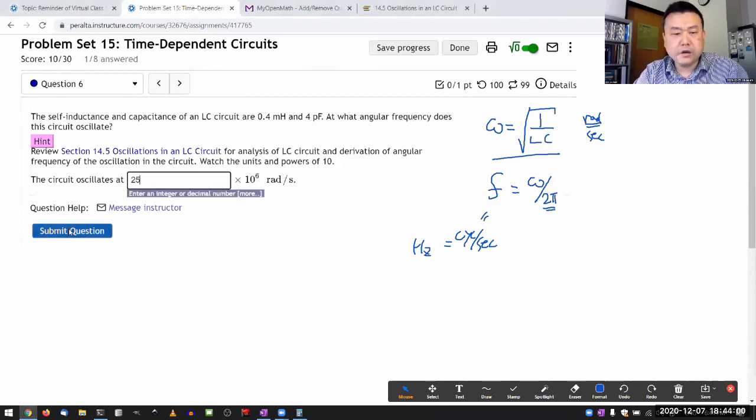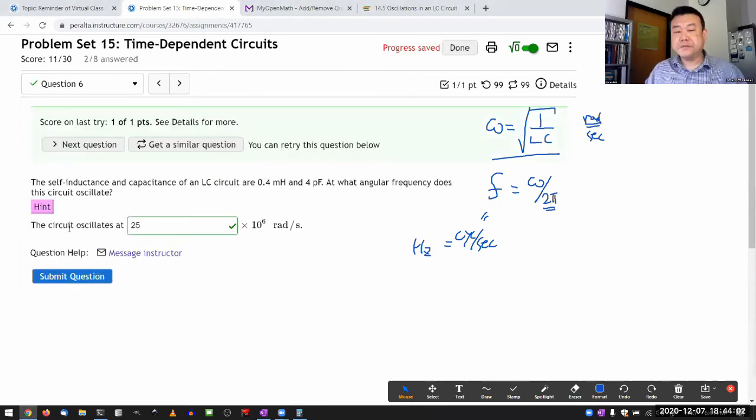It gives 25 times 10^6 radians per second. So 25... that's pretty high. Yeah, it's just making you look up the formula for LC circuit oscillation.